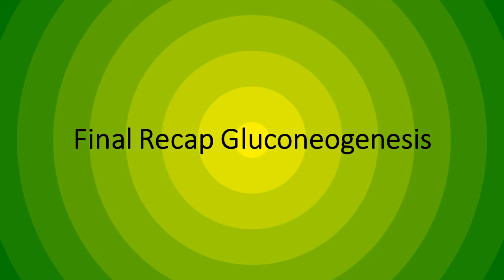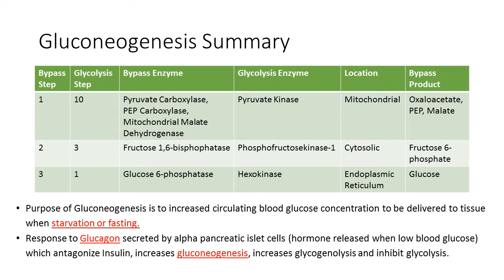Let us move on to the final recap of gluconeogenesis. This concise table summarizes everything you need to understand from this video. During bypass 1, which corresponds to glycolysis step 10, three enzymes are used: pyruvate carboxylase, PEP carboxykinase, and mitochondrial malate dehydrogenase, to allow passage via the malate shuttle from mitochondria to cytosol. These 3 enzymes reverse the action of pyruvate kinase. The products are oxaloacetate, PEP, and malate respectively.